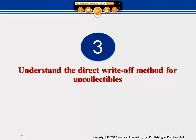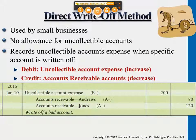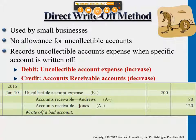The main difference between the allowance method and direct write-off is that the direct write-off method does not do an estimation before. It only writes off the accounts for Andrews and for Jones — remember, these are the two bad debt accounts — it writes them off directly when companies deem these accounts as uncollectible accounts receivables. They do not have this first estimation entry; they start from writing off directly, which is why it's called the direct write-off method.